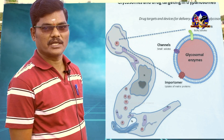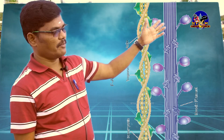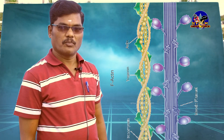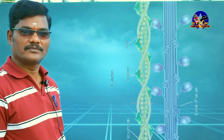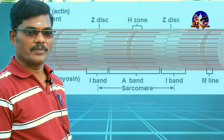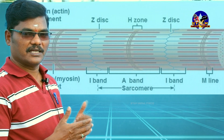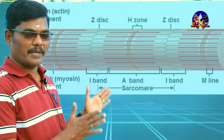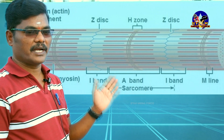One protein is called actin and another is myosin — actin and myosin. These are very important proteins present inside the muscle fiber. Inside the muscle fibers, they have a rod-like structure called myofibrils. In the myofibrils, we see dark bands as well as light bands alternatively arranged.